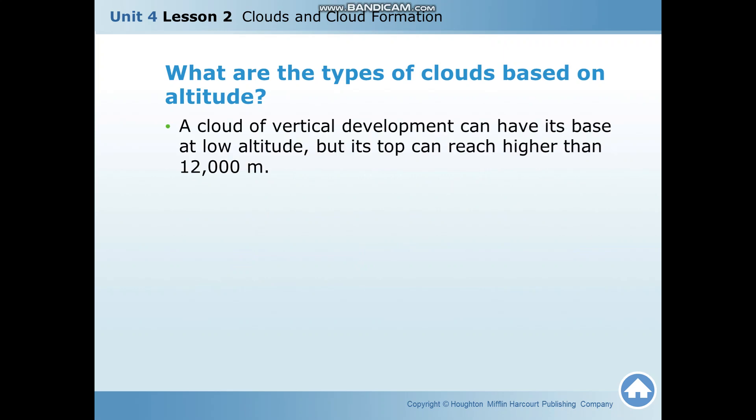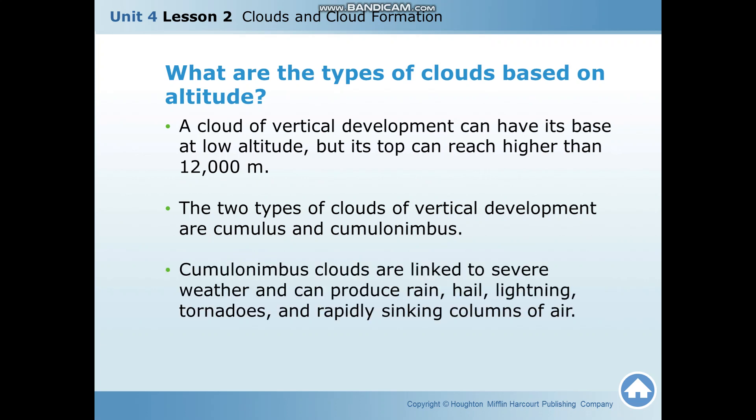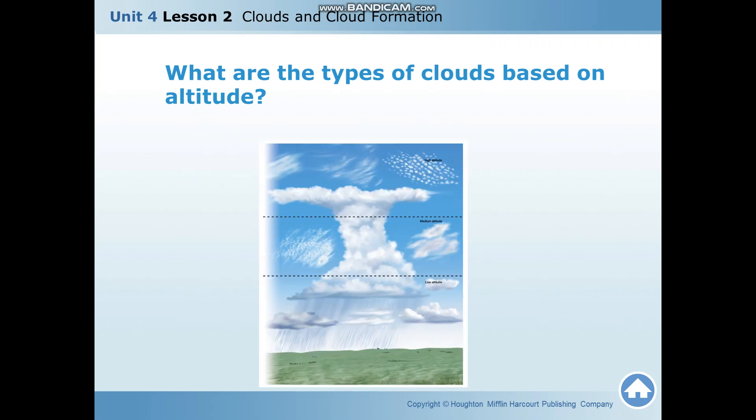A cloud of vertical development can have its base at low altitude but its top can reach higher than 12,000 meters. The two types of clouds of vertical development are cumulus and cumulonimbus. Cumulonimbus clouds are linked to severe weather and can produce rain, hail, lightning, tornadoes, and rapidly sinking columns of air.